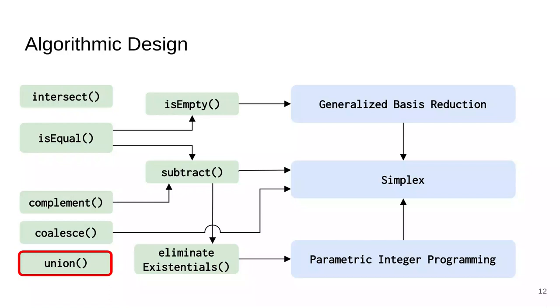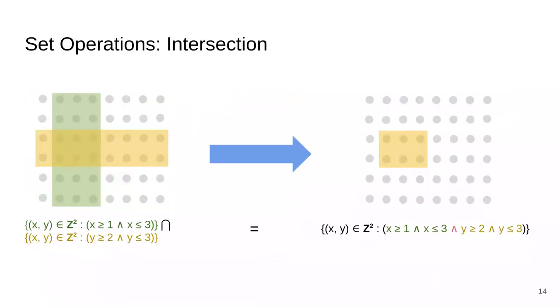Now let's look at some of the algorithms and how to accelerate them. We've already seen that the union operation basically boils down to copying some constraints. Now let's look at intersect. Intersecting two integer polyhedra essentially just involves copying the constraints from both the inputs into the output. Because the intersection of two polyhedra is the set that satisfies the constraints of both.